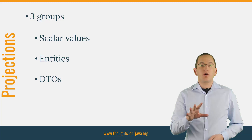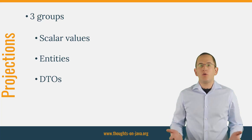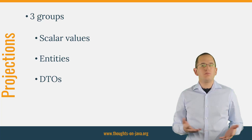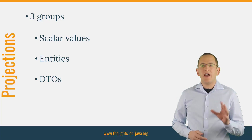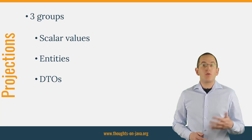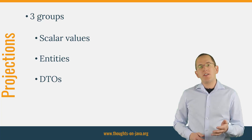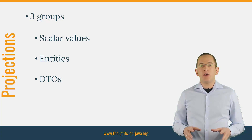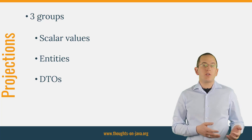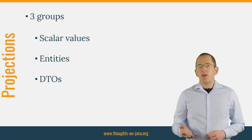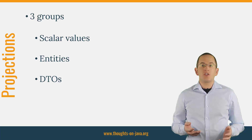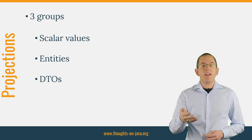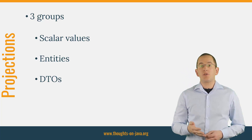SQL only supports scalar projections, like table columns or the return value of a database function. So how can JPA and Hibernate support more projections? Hibernate first checks which information it needs to retrieve from the database and generates an SQL statement with a scalar value projection for it. It then executes the query and returns the result if you used a scalar value projection in your code. If you requested a DTO or entity projection, Hibernate applies an additional transformation step, iterating through the result set and instantiating an entity or a DTO object for each record.